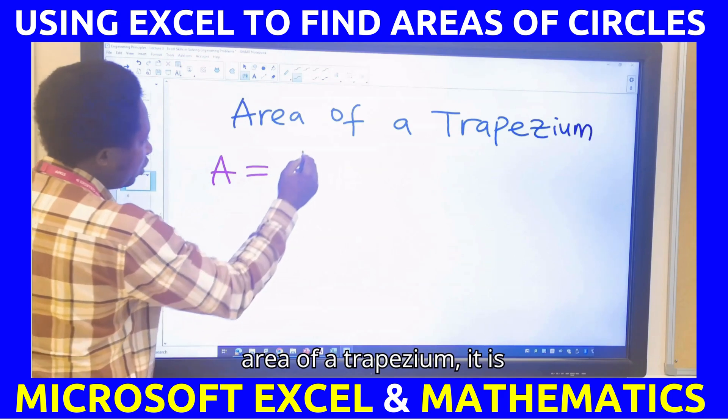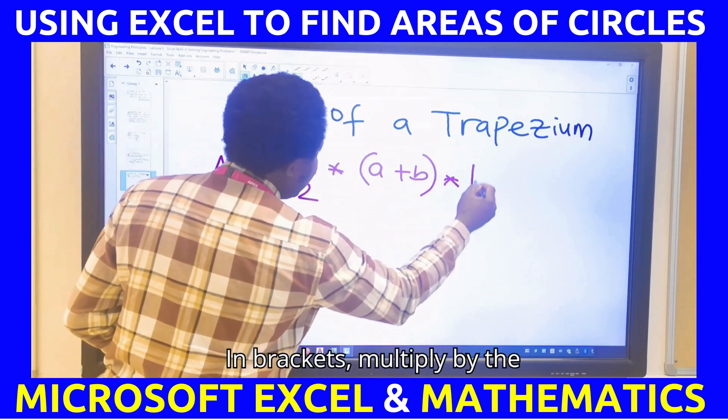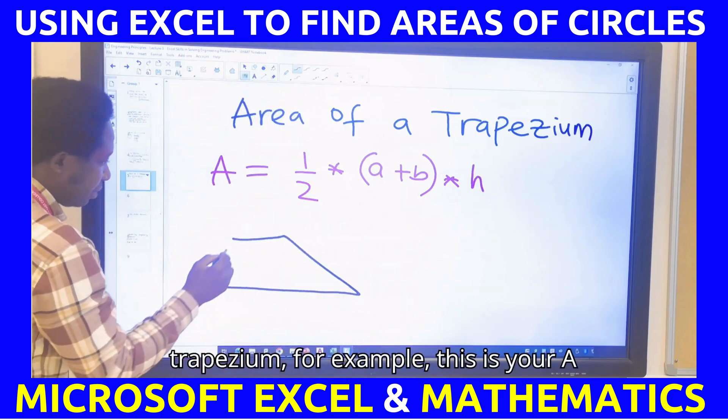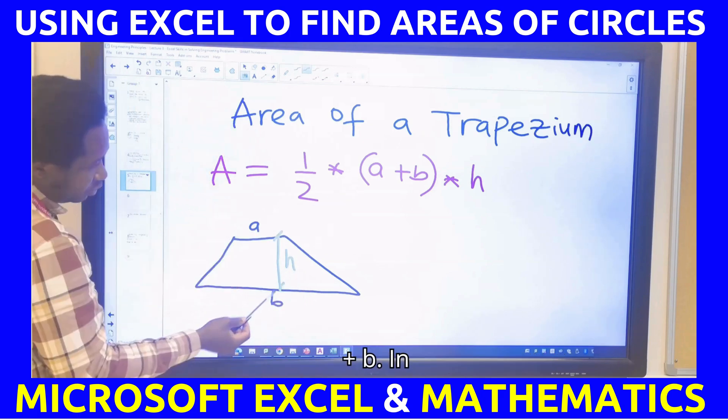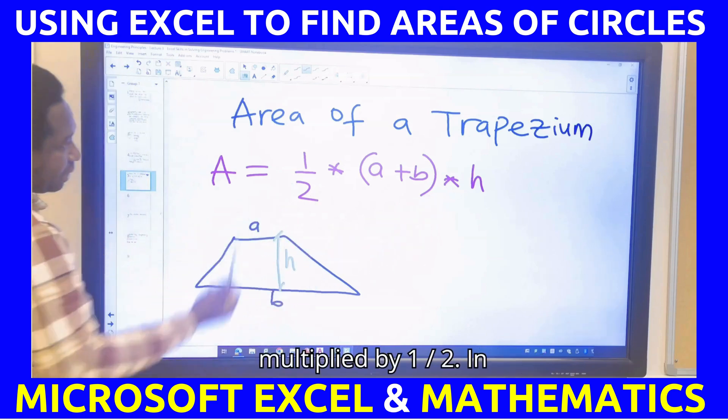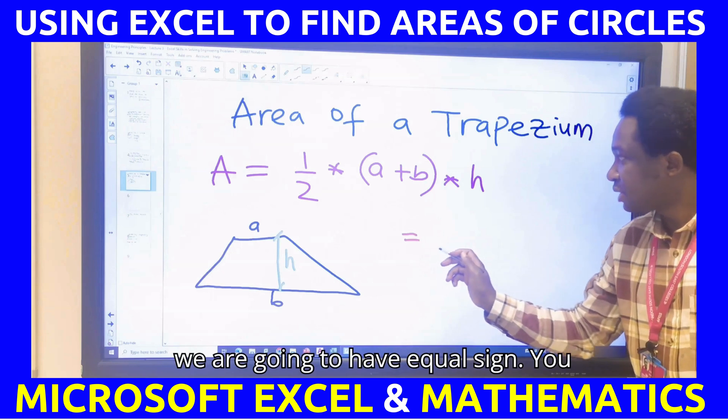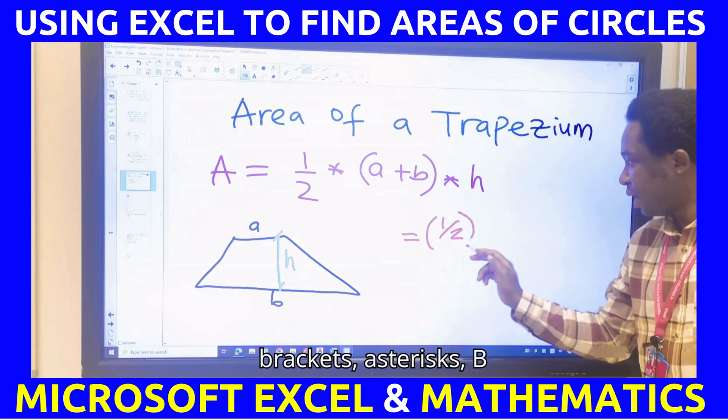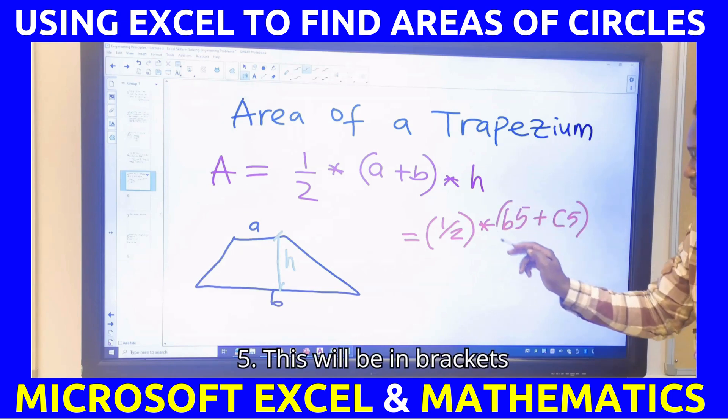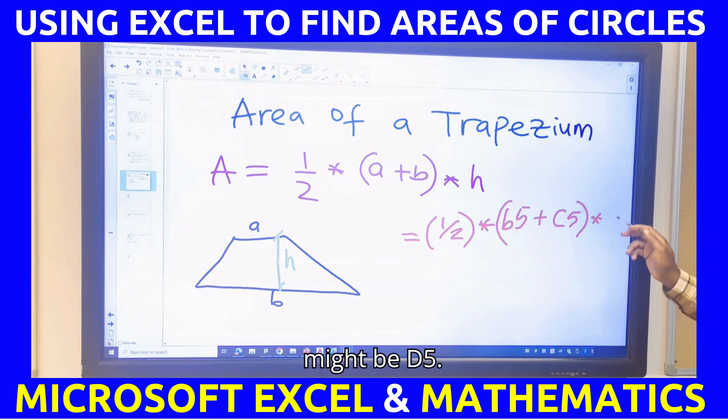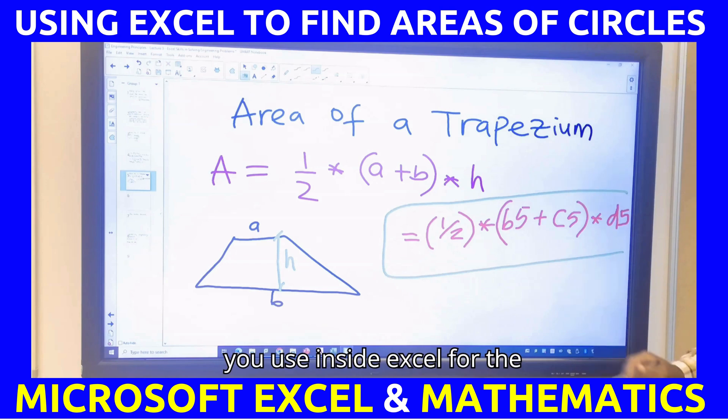For the area of a trapezium, it is half times A plus B in brackets multiplied by the height. If this is the trapezium, for example, this is your A and this is your B. This is the height. You're going to have A plus B in addition multiplied by the height multiplied by 1 over 2. In Excel, if we want to type this in Excel, we are going to have equal sign. You can have 1 divided by 2 in brackets, X star X, B5 plus C5, this will be in brackets, times the cell, here you have your H, might be D5. Press enter key. And this is what you use inside Excel for the formula.